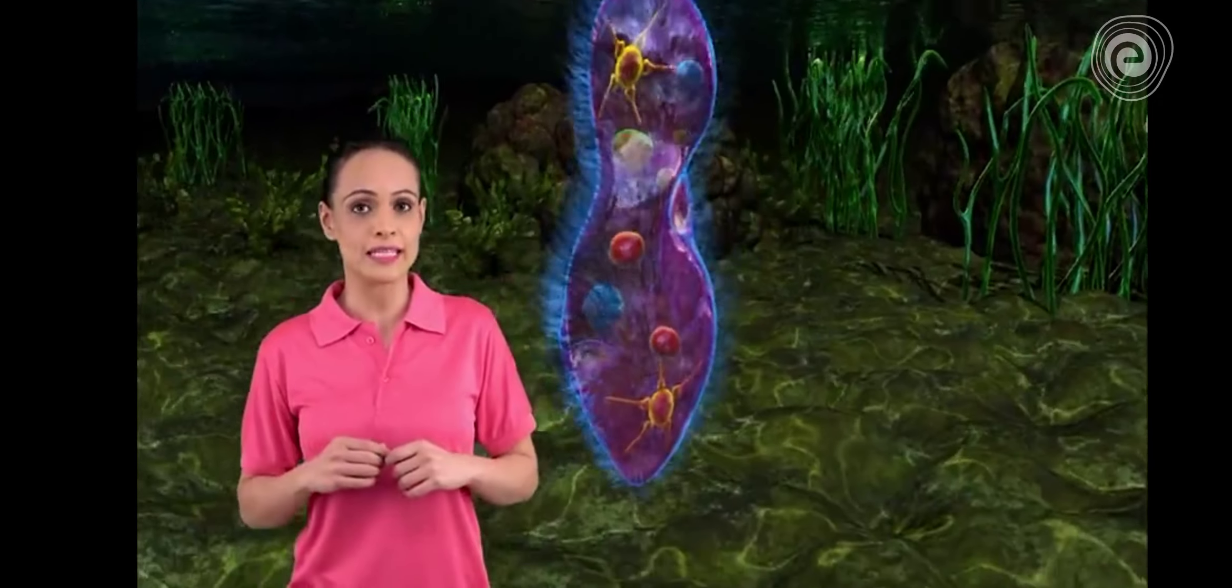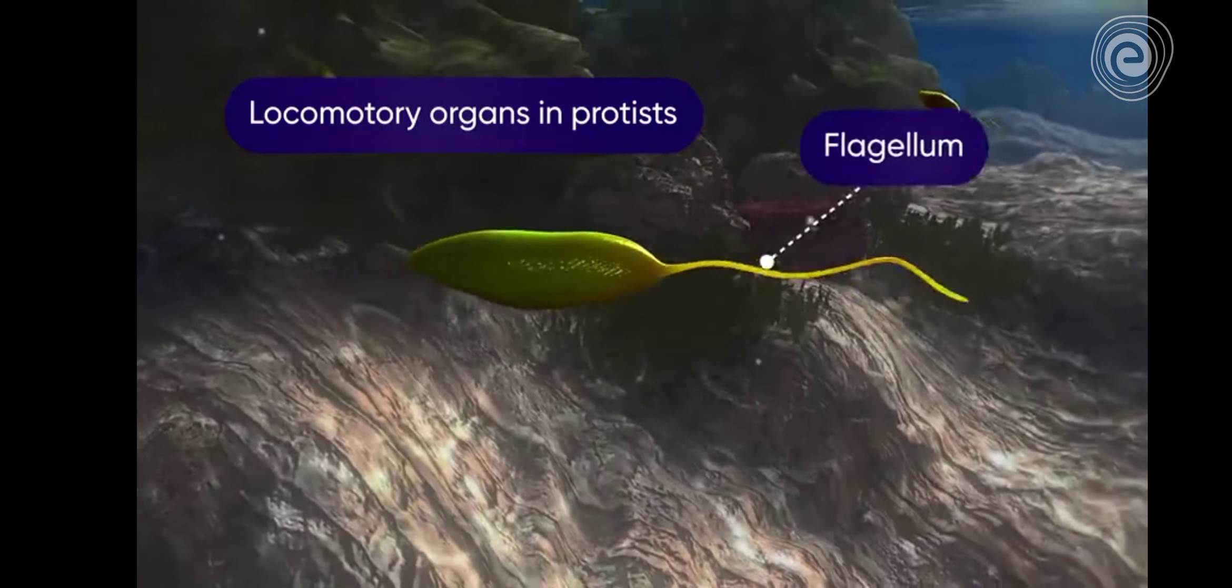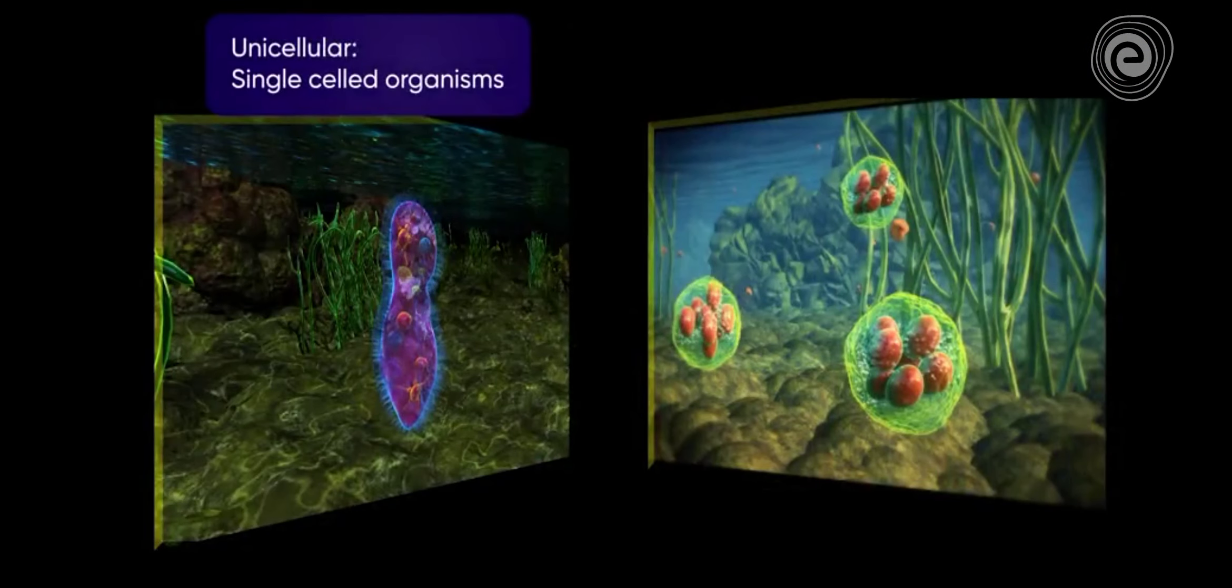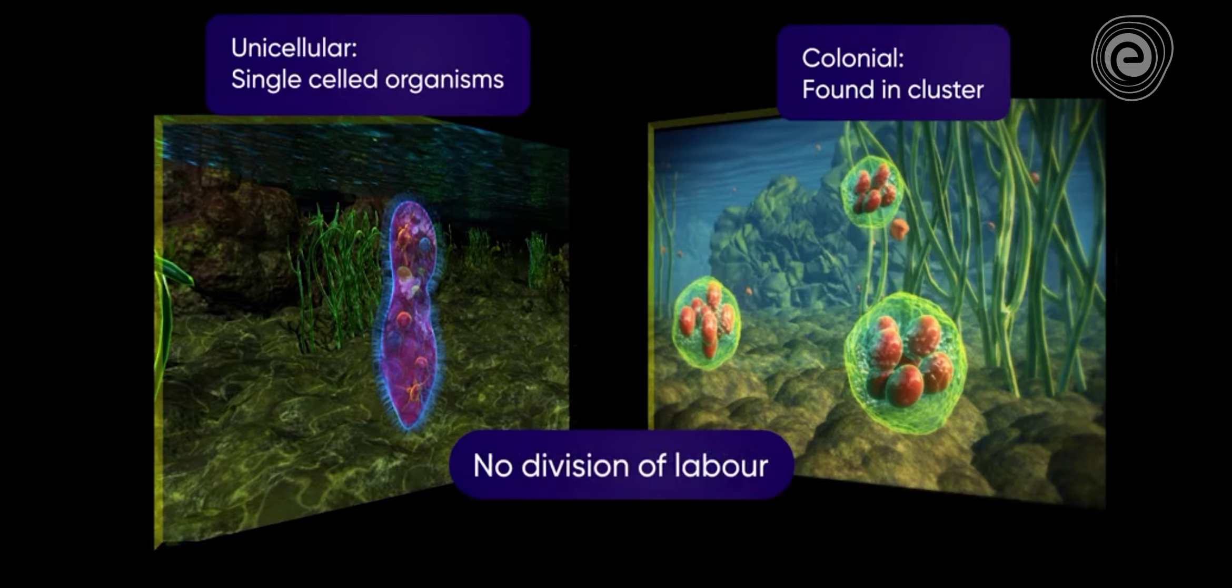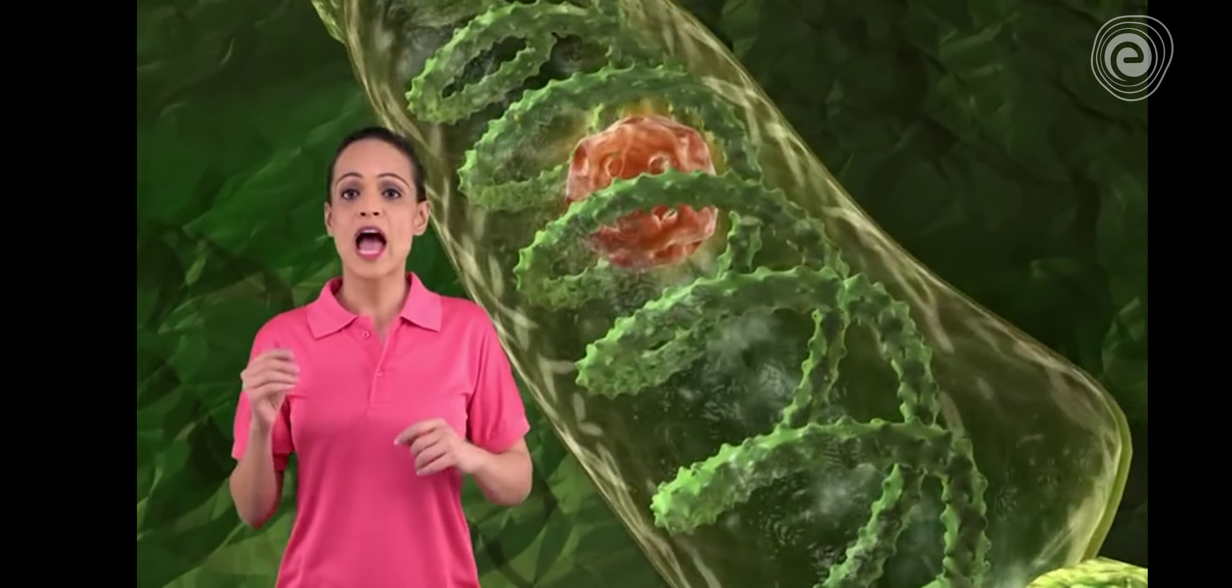They are either microscopic or can be seen with naked eyes. They bear cilia or pseudopodia for locomotion. They are usually unicellular. They exhibit colonial patterns. They do not show division of labor.